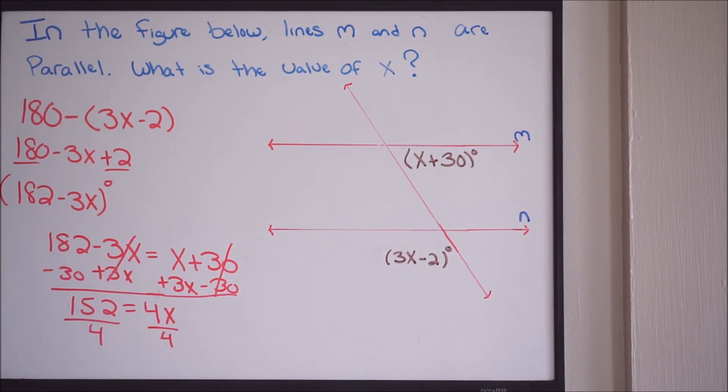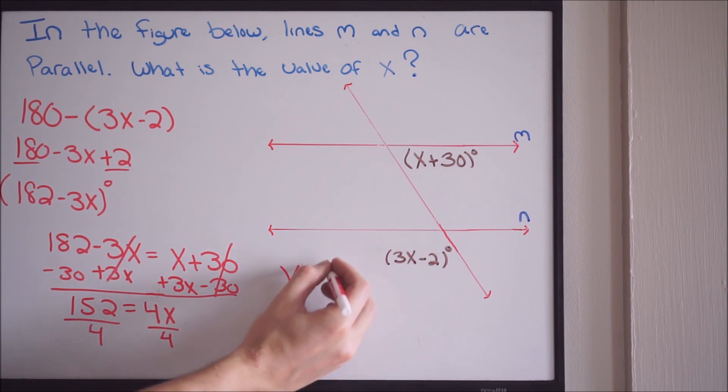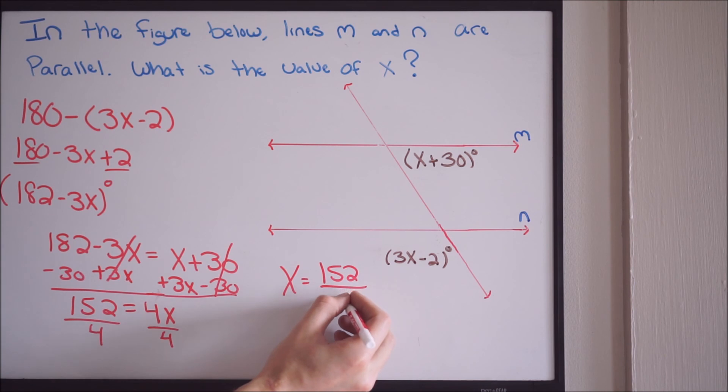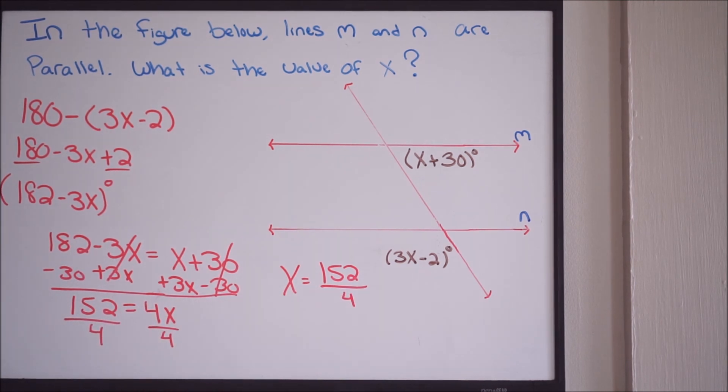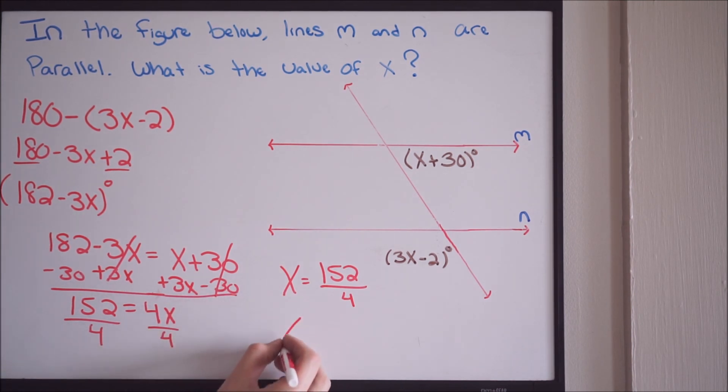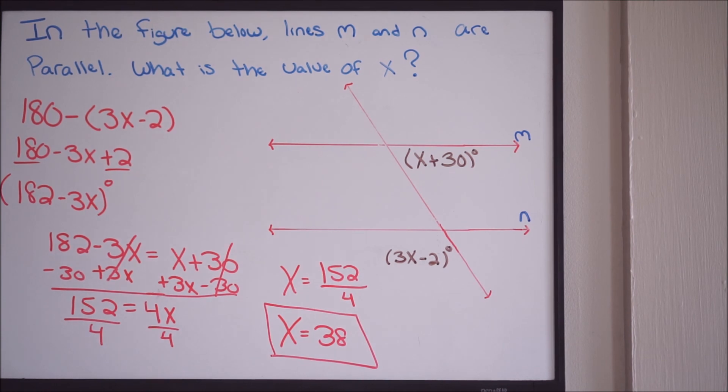So we divide by 4. So we get x equals 152 all over 4. So we know here if we do 152 divided by 4, we're going to get 38. So x is going to be equal to 38. And that is going to be our final answer. And that is it.